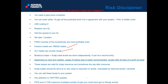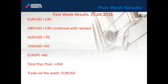Pips pool is the maximum available number of pips you could have gathered on recap entries. These are last week's results from the 25th of April: Euro dollar — 440 pips. Pound dollar — we had two positions, both successful, combined 130 pips. Australian dollar — 70 pips. Dollar CAD — 50 pips. Euro Yen — 60 pips. Total pips pool was 450.